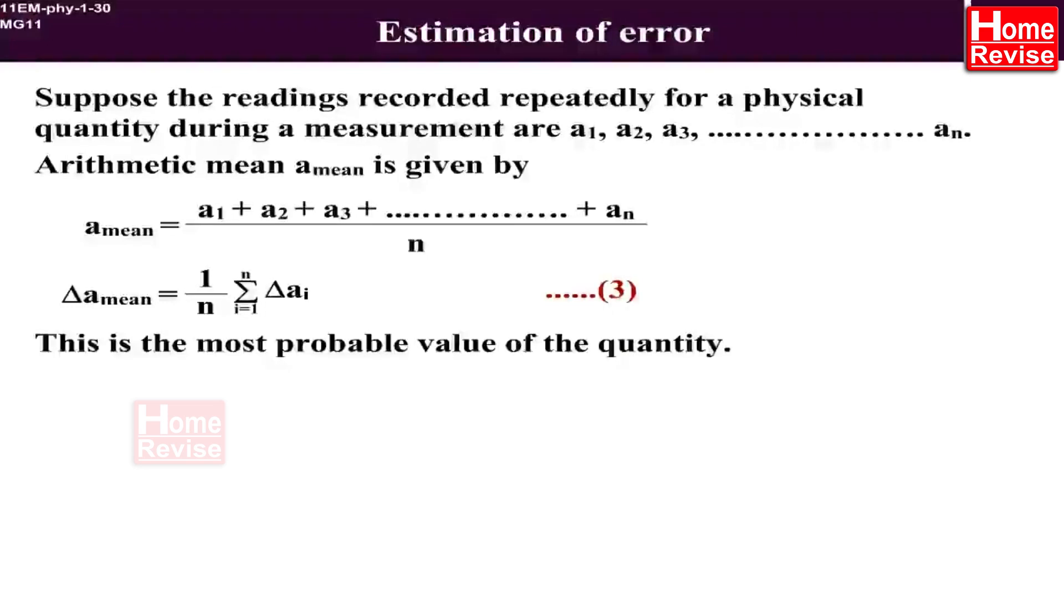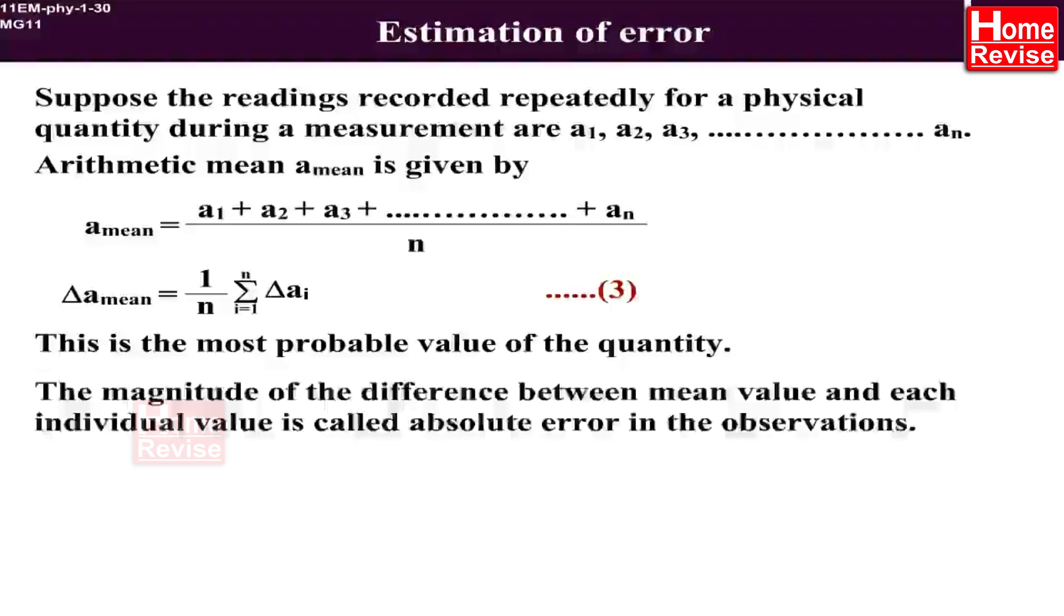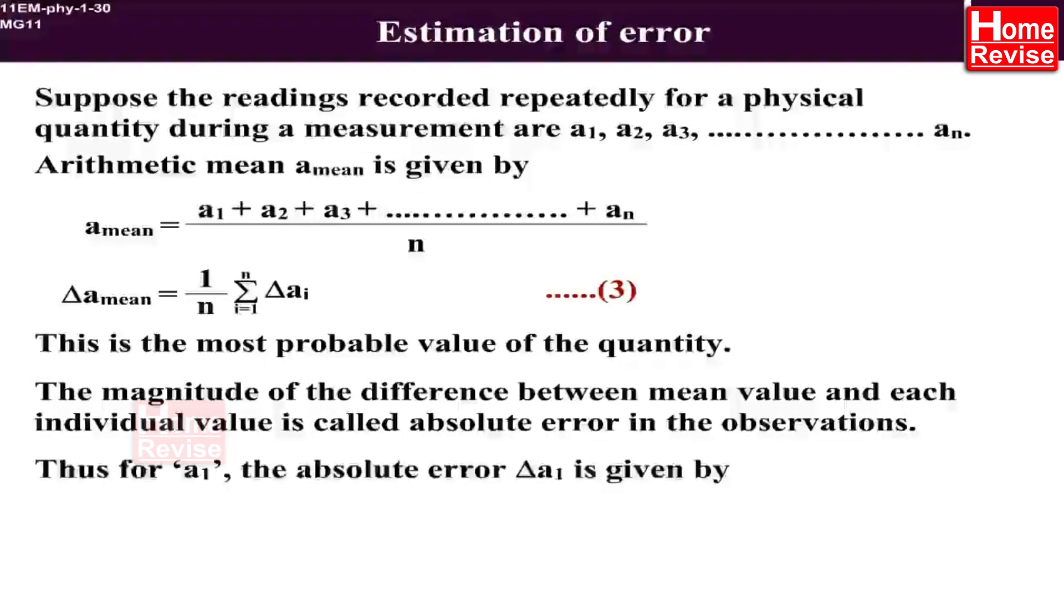the most probable value of the quantity. The magnitude of the difference between mean value and each individual value is called absolute error in the observations. Thus for A1,